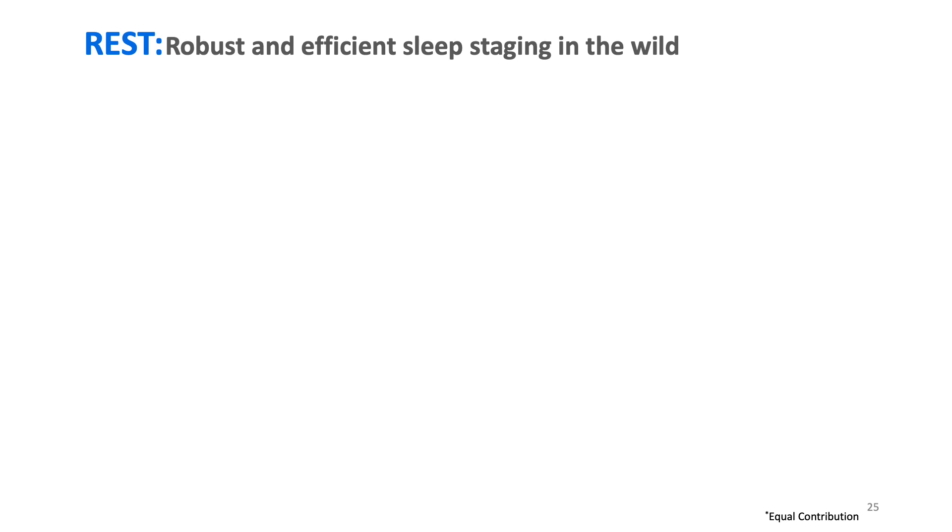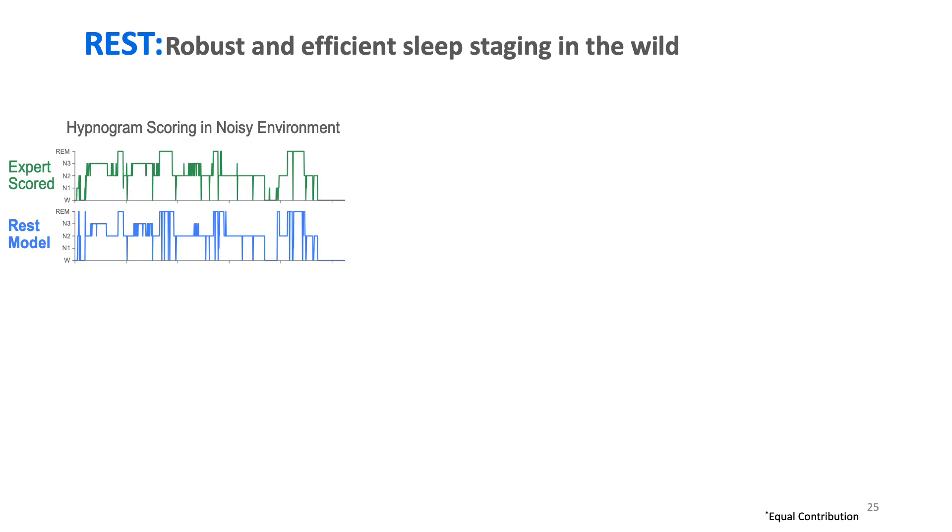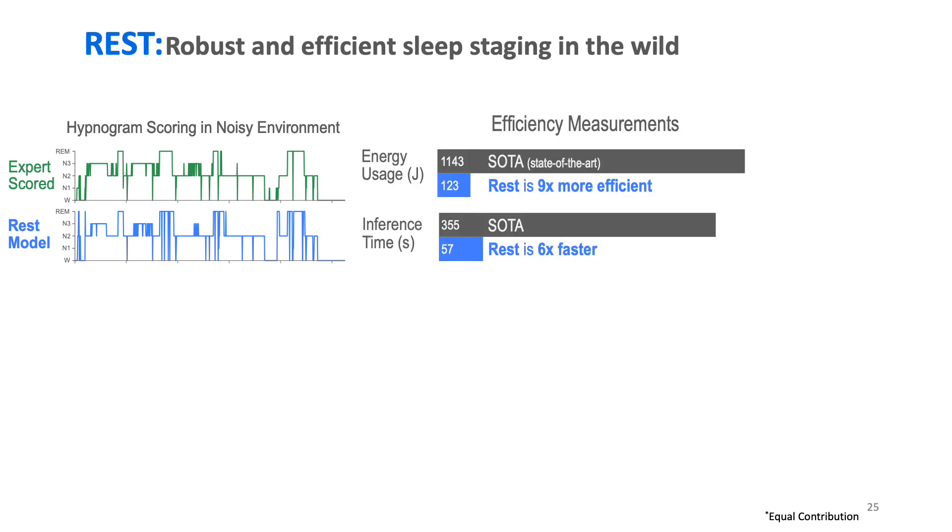To summarize our contributions in this paper, we propose a method REST which can impart both noise robustness and efficiency to a neural network. This allows us to produce high-quality hypnograms even in the presence of large amounts of noise. Further, the models developed through REST are up to 9 times more efficient and up to 6 times faster.